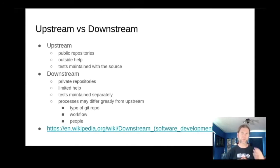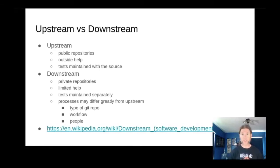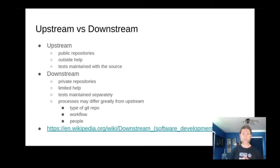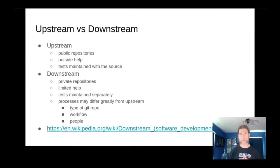Upstream is generally hosted in public repositories where anyone can help contribute, so getting outside help is easier. Tests are often maintained right alongside the source code in the same repository, so everything can be easy to find. Downstream is often hosted in private repositories. Even if a company provides the software source code for free, they may not allow public access to their source code management systems. Tests downstream are often maintained in a separate repository entirely from the source code.